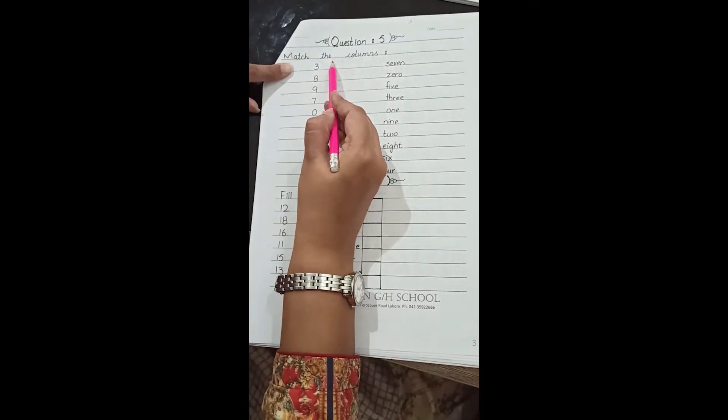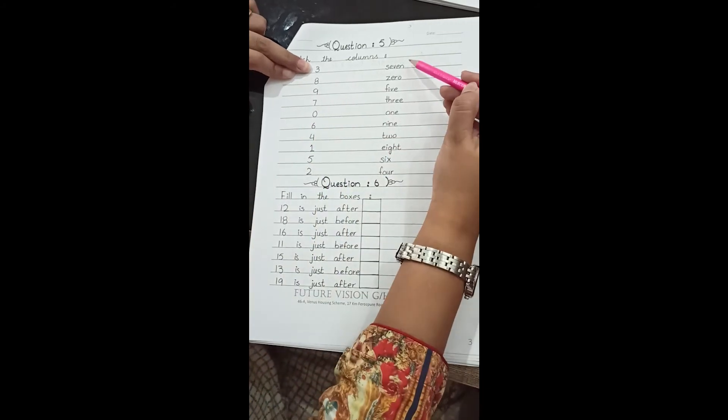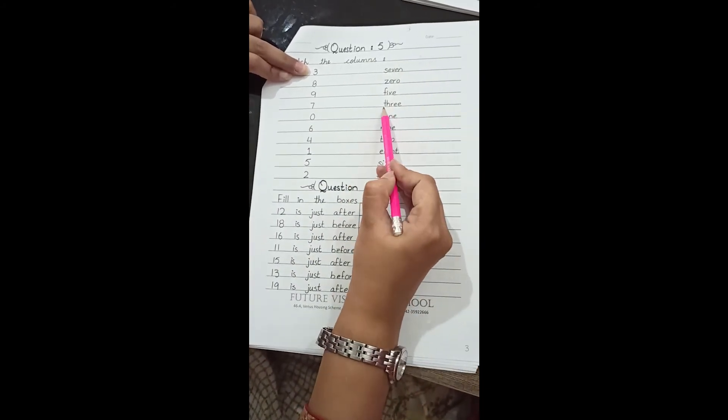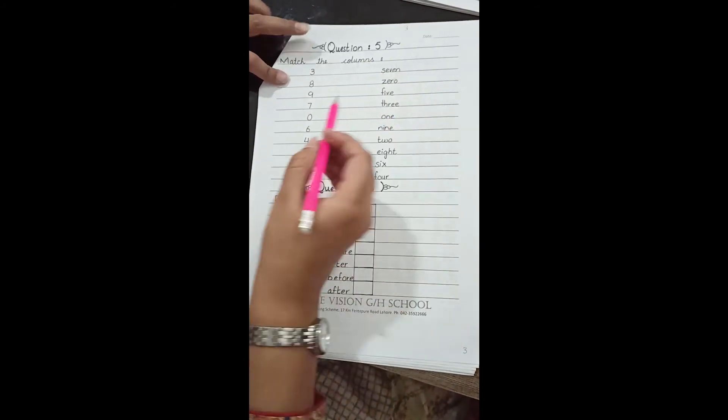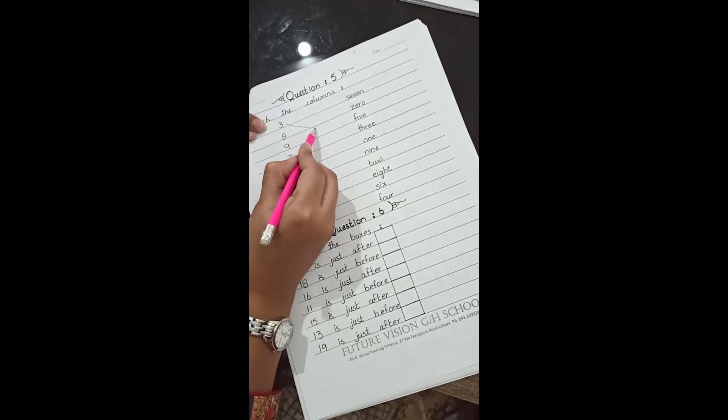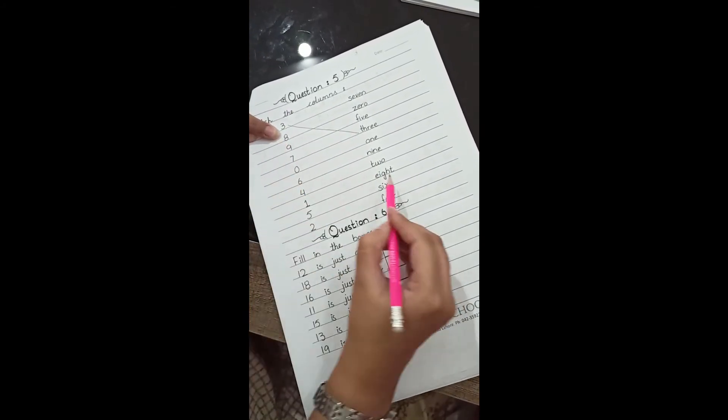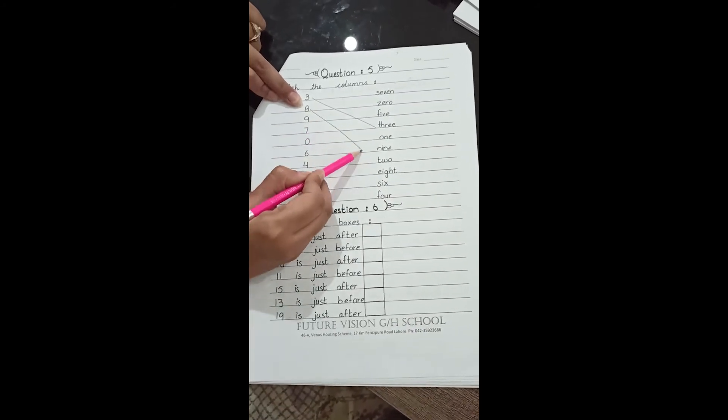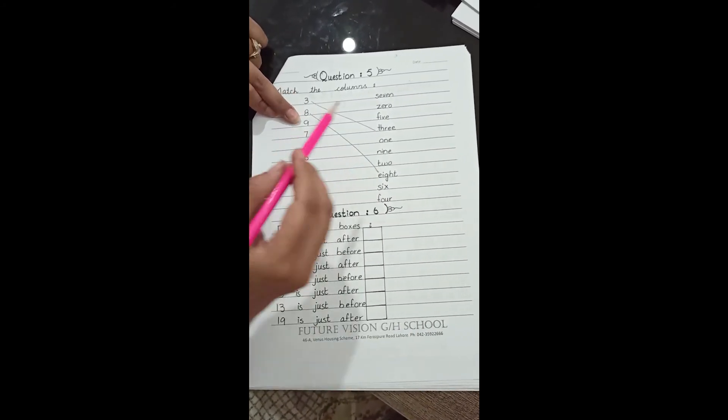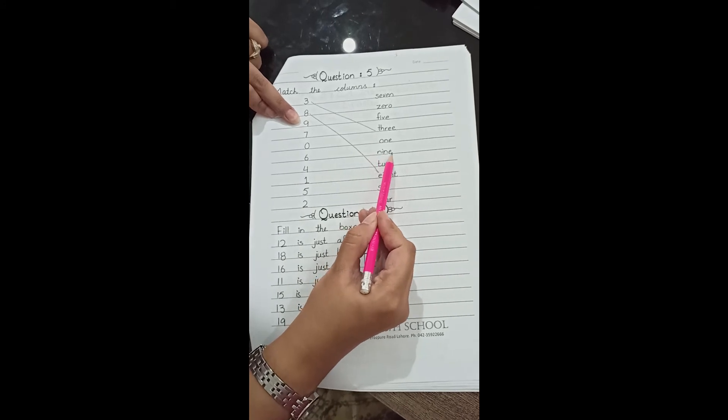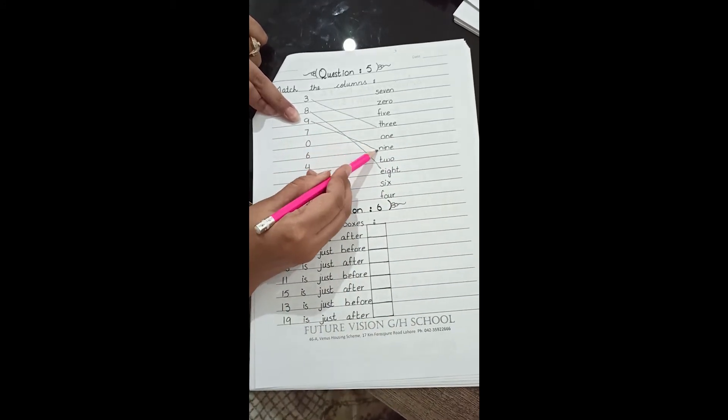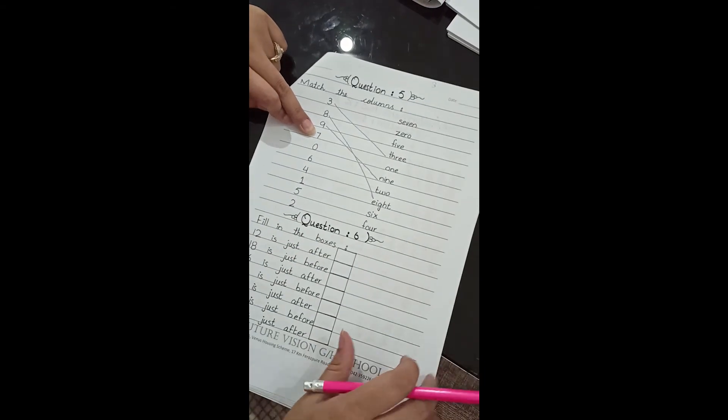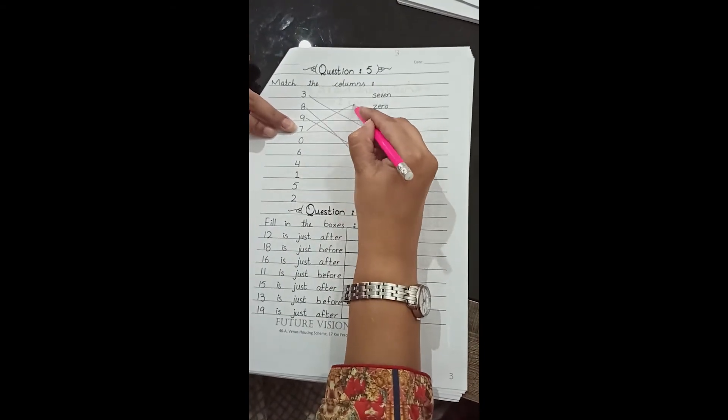Match the columns. 3: search here for 3, t-h-r-e-e, match this 3 with 3. 8: e-i-g-h-t, match with 8. 9: n-i-n-e, 9. 7: s-e-v-e-n, where is 7? Here is 7. Very good.